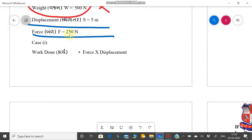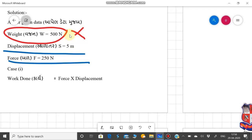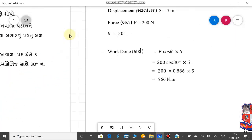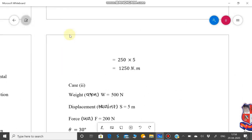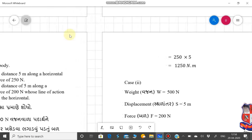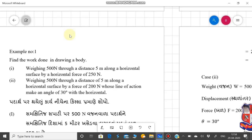Case 1, the work is force into displacement. Force 250, distance 5 meter. Simple, 250 into 5 is equal to 1250 Newton into meter. Ready? Simple, force into distance. This is the answer. Direct, you got your answer.